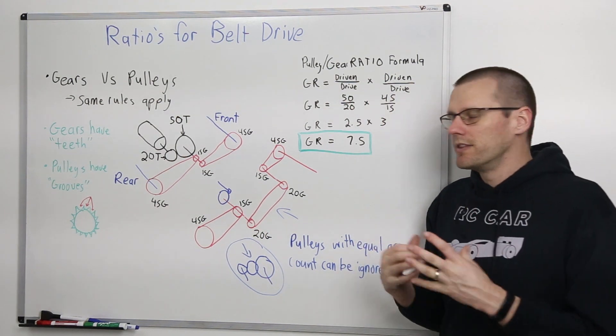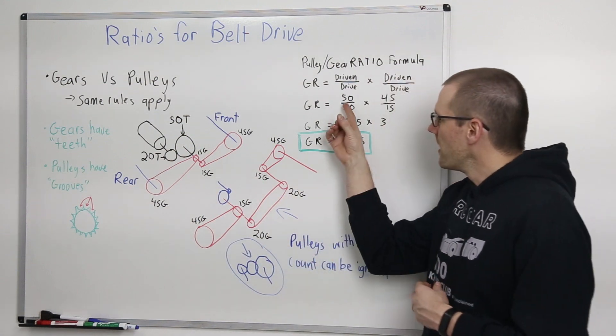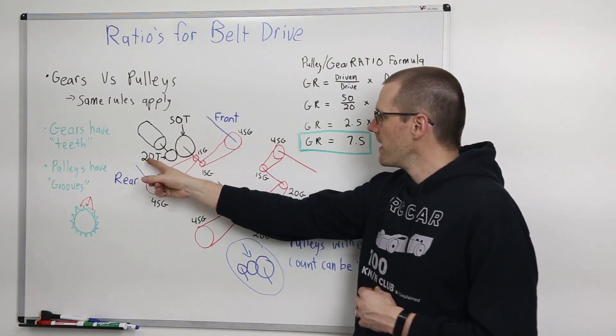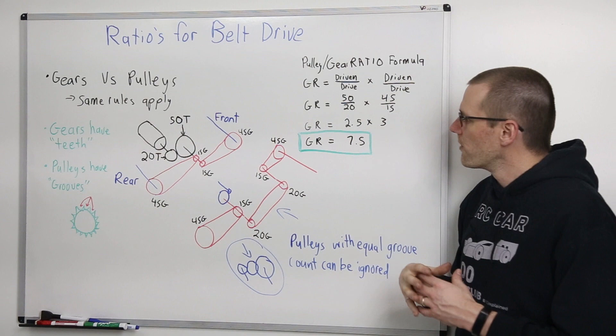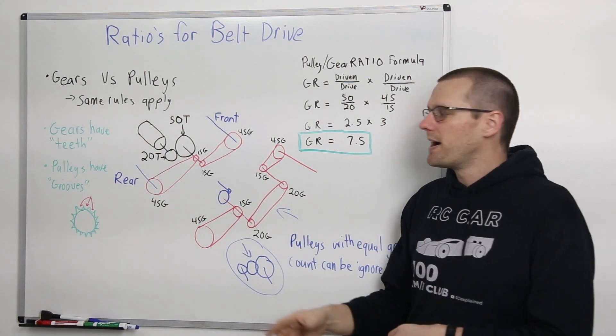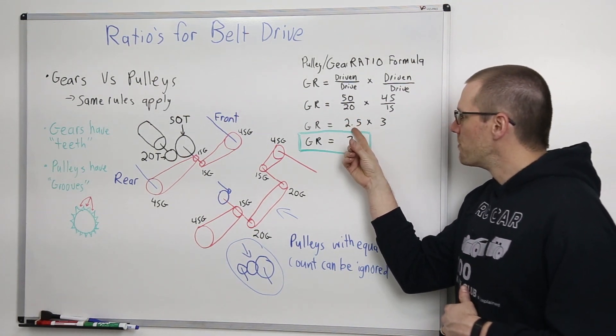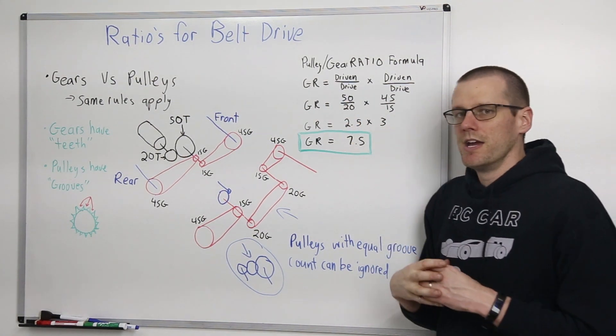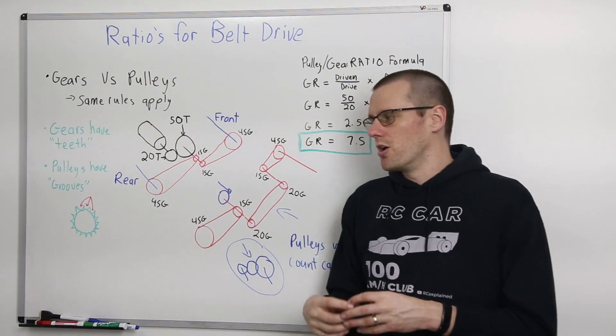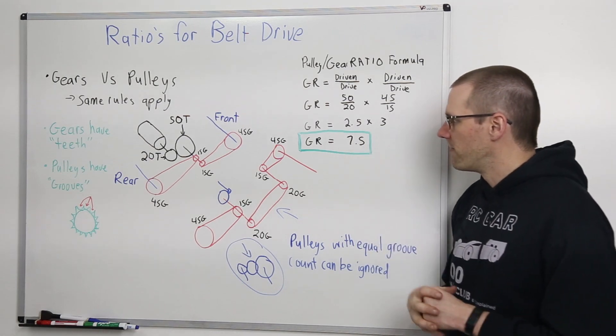So here we go. We just substitute our values in. In this case, our first one is going to be for the gears. We have 50 tooth divided by our 20 tooth. And then for our pulley system, we're going to have the 45 groove divided by the 15 groove pulley. From there, we get values of 2.5 multiplied by 3. And we can see our overall drive ratio for this particular system is going to be 7.5.